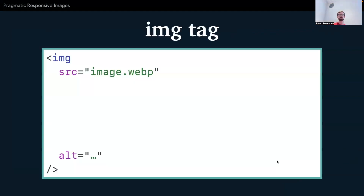Let's dive in with some basics about images in HTML. You all know this — it's an image tag, we've known this from the beginning of the web. I'm using WebP here, which is a bit newer, but it's just a file format. If you want to get started with responsive images, you need at least two new attributes for this image tag.